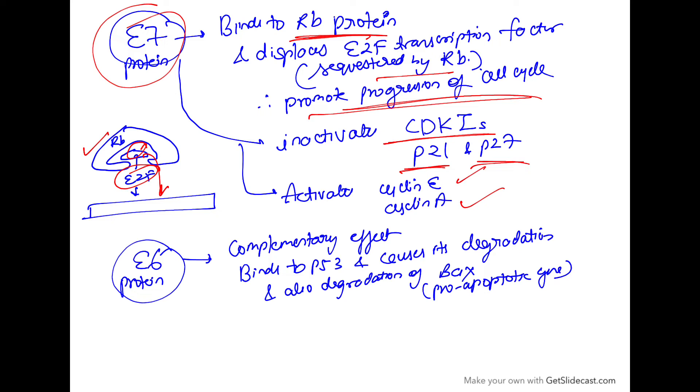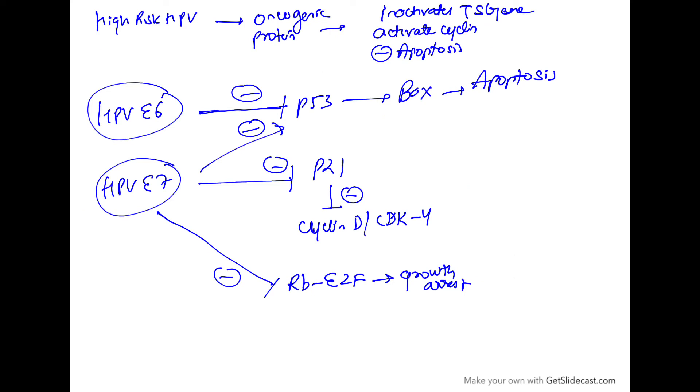Now what about E6 protein? E6 protein has a complementary effect. It binds to p53, which is a tumor suppressor gene, and causes degradation. It also leads to degradation of Bax. Bax is a pro-apoptotic gene that causes apoptosis.